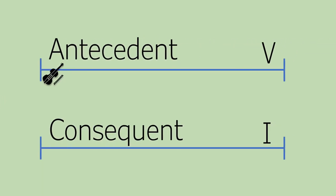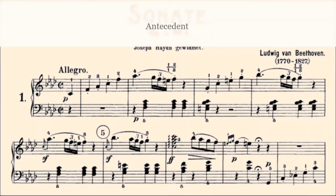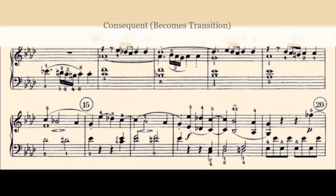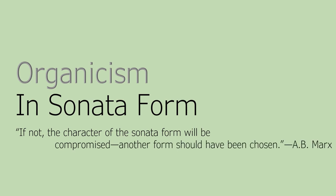For instance, Marx shows how the beginning of Beethoven's piano sonata in F minor, Op. 2, suggests a balanced and tonally stable period form consisting of an antecedent and consequent. However, Beethoven then allows the consequent phrase to open up into a transitionary phrase, which counteracts the stability of the period. For Marx, this is how Beethoven injects a driving impulse that balances out the stagnation and predictability of the period. Let's take a listen. Marx argues that a driving impulse such as what we heard must always be there to balance out any stagnation in sonata forms. If not, the character of the sonata form will be compromised — another form should have been chosen.